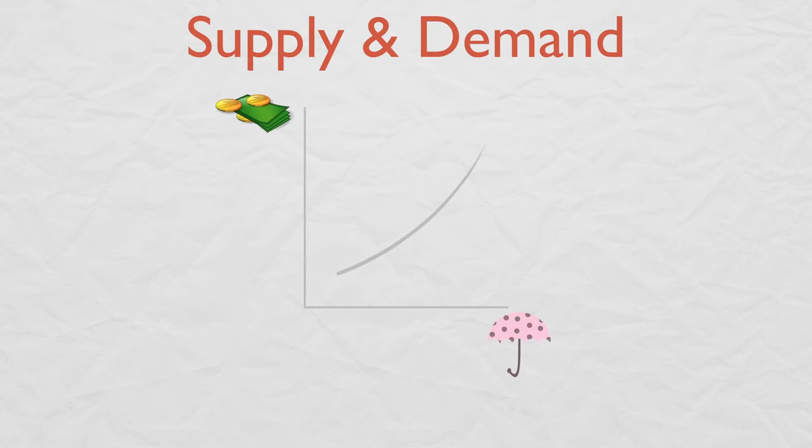If we graph our supply curve and our demand curve together, we get this cool little x. The price at which supply and demand cross is the market clearing price.